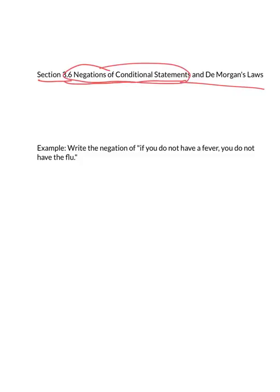So negation, that was that squiggle, that tilde symbol. And inside the parentheses, I'm going to put a conditional, that's the if-then arrow. And let's just pretend we have P in the if portion and Q in the then portion. So I'm going to negate, take the opposite meaning of, in other words, if-P-then-Q.